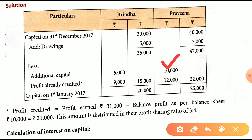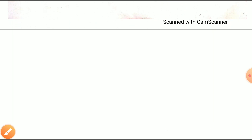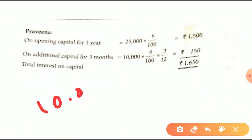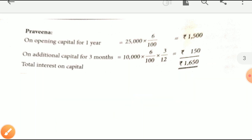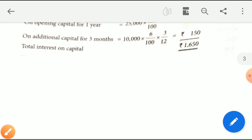For Praveena's additional capital of 10,000: 10,000 into 6 divided by 100 gives 600 for the full year portion. Then for the additional capital introduced for 3 months: 10,000 into 6 divided by 100 into 3 divided by 12 equals 150. So 1,500 and 150 gives a total of 1,650.